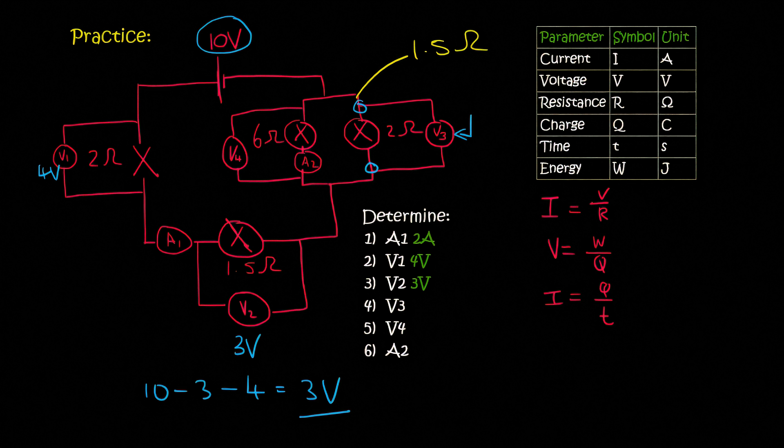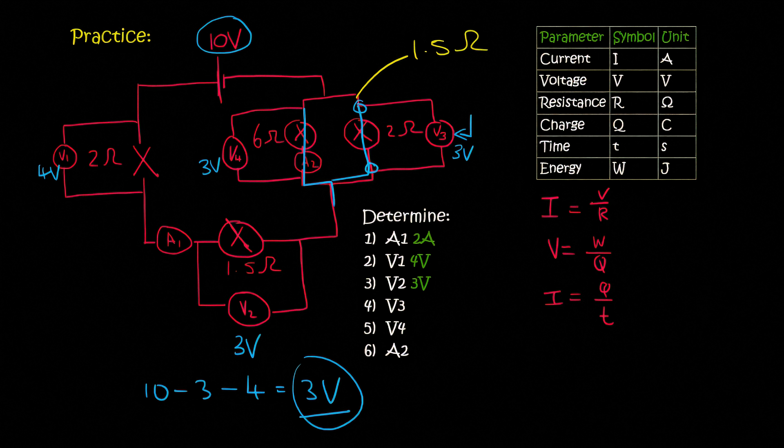And so we said that when you are in parallel, voltage is the same for both. So you're not going to divide this by 2. What it means is that V4 will be 3 volts, and V3 will also be 3 volts. That is very important that you understand that voltage in parallel is the same. And if there's 3 volts left, you're not going to say 1.5 and 1.5.